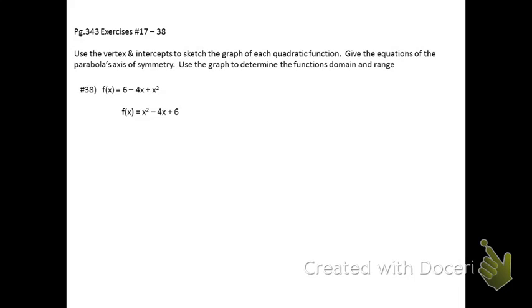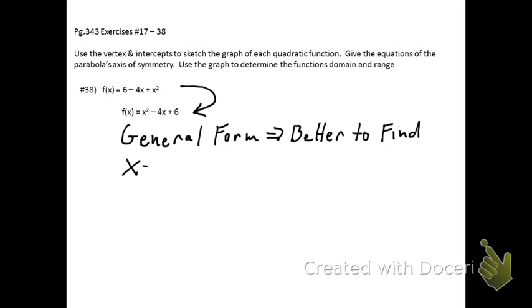There's another type of problem you're going to find in this homework assignment, and that is a situation where your quadratic is already given in general notation. Now for these type, I strongly suggest that you use the negative b over 2a to find the x-coordinate of the vertex.